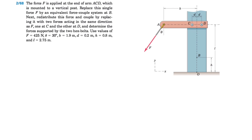In the second part, we need to redistribute this force and couple by replacing it with two forces acting in the same direction as F — two different forces at C and D, making angle theta with the vertical at both C and D. We need to determine the forces supported by the two hex bolts at C and D. We have values for F, theta, B, D, H, and L, which are dimensions given in the question.